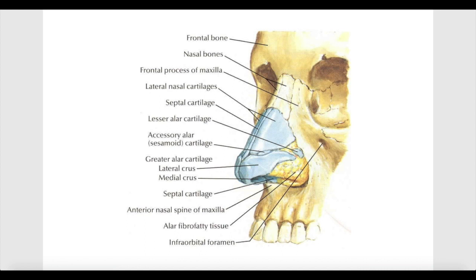The external nose is that part of the nose that we see when we look at the face of somebody. The external nose can be described as having an osteocartilaginous framework, meaning it is composed of bones and cartilages. Osseous means bones and cartilaginous means cartilages.